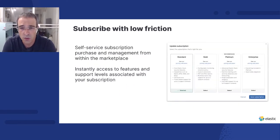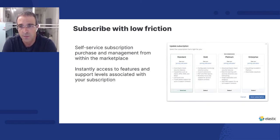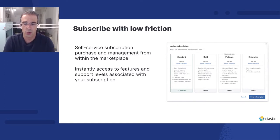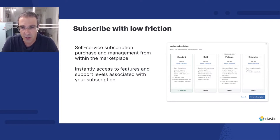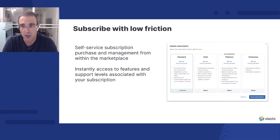Subscribing is also super easy. Once you've completed a free trial, you can sign up and choose the product tier that suits your needs — and you can change this at any time. We'll only charge you for what you actually used. If you already have a cloud account with Azure, Google, or AWS, you can also subscribe through their respective marketplaces and get billed via your account with those cloud providers.